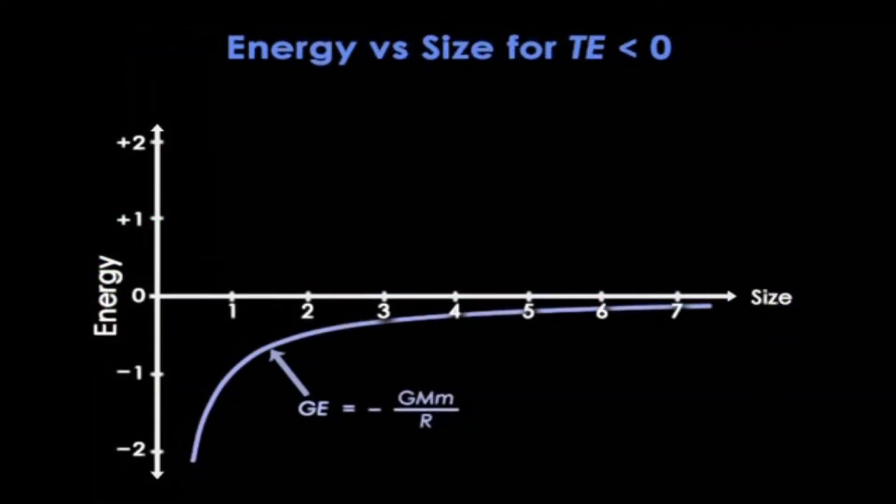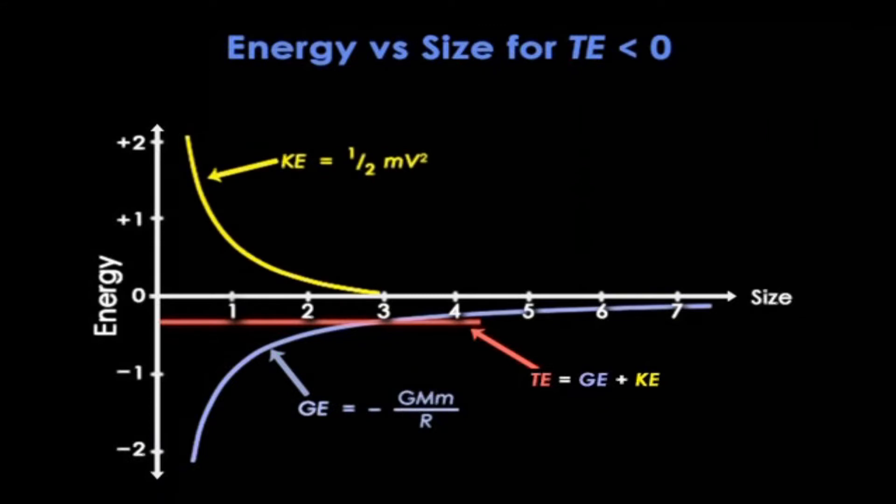Our final example is when the total energy is negative, so we're expecting it to re-collapse. In this case, the total energy, the red line, is now below the x-axis. So this time, the kinetic energy drops, but it hits zero. But at zero kinetic energy, the rocks are stationary. You can't go below zero to negative kinetic energy. It doesn't exist.